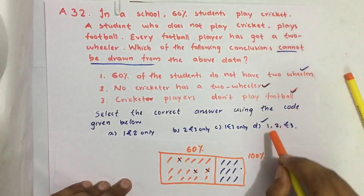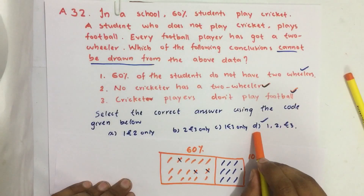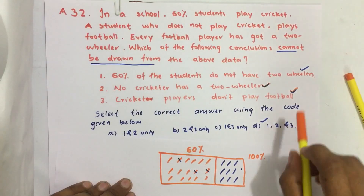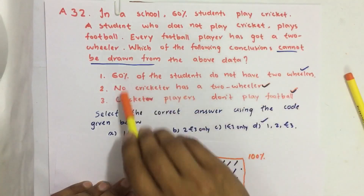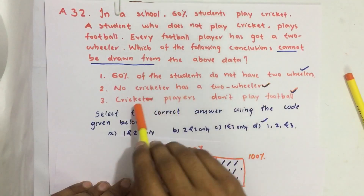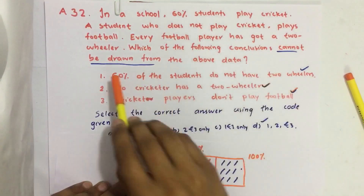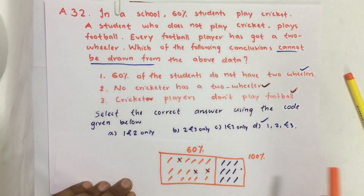So our answer is option D — 1, 2, and 3. All three conclusions cannot be drawn from the above data.